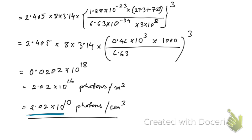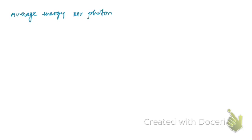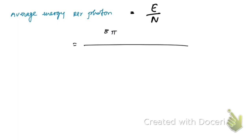Now we need to find the average energy per photon. The average energy per photon is obtained by dividing the total energy of radiation per unit volume by the number of photons n. The energy of radiation per unit volume is given by the expression 8π⁵k⁴ / (15 c³ h³) × T⁴.